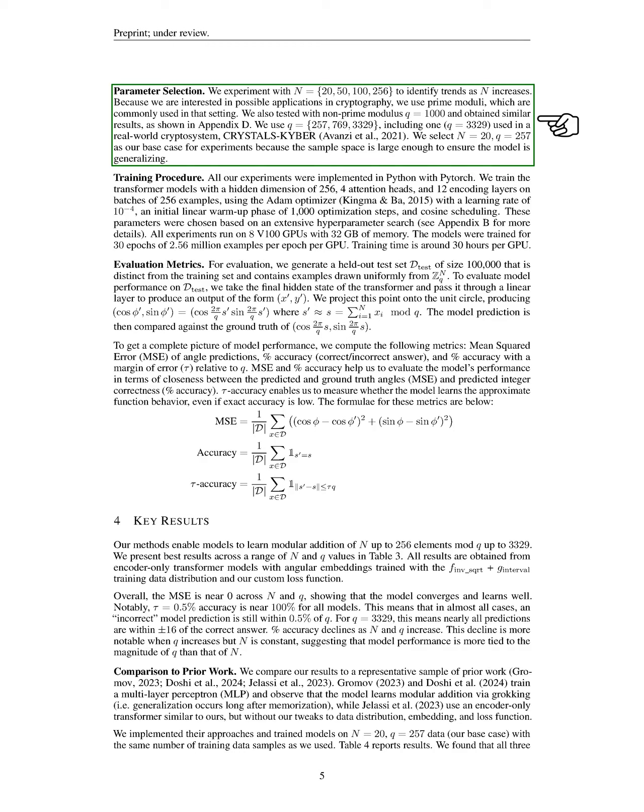Since we are interested in applications in cryptography, we use prime numbers for our modulus, which are commonly utilized in that field. We also tested a non-prime modulus of 1000 and found similar results, as detailed in the appendix. Our chosen moduli include 257, 769, and 3329, with 3329 being used in the real-world cryptosystem Crystals-Kyber. We select 20 elements and a modulus of 257 as our base case for experiments, ensuring a sufficiently large sample space for model generalization.